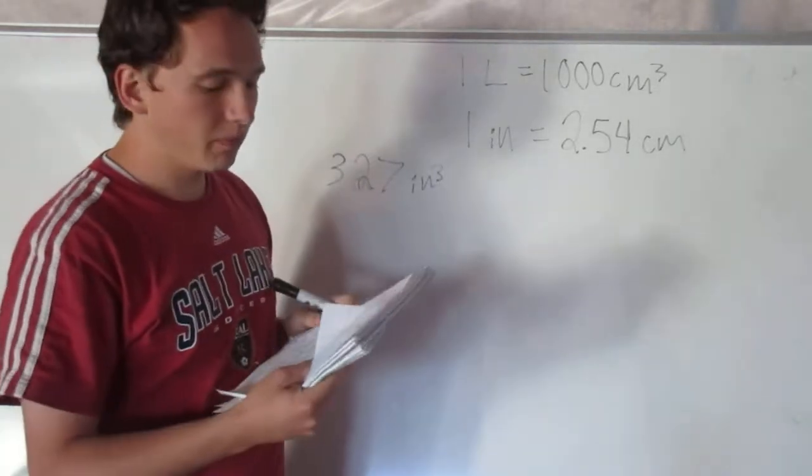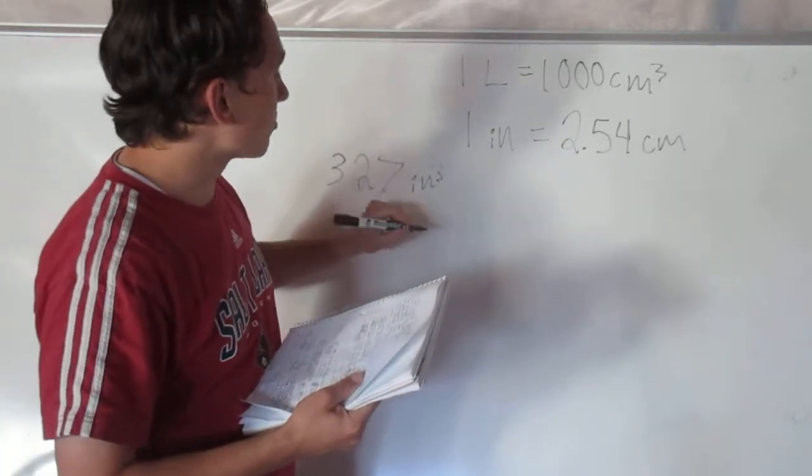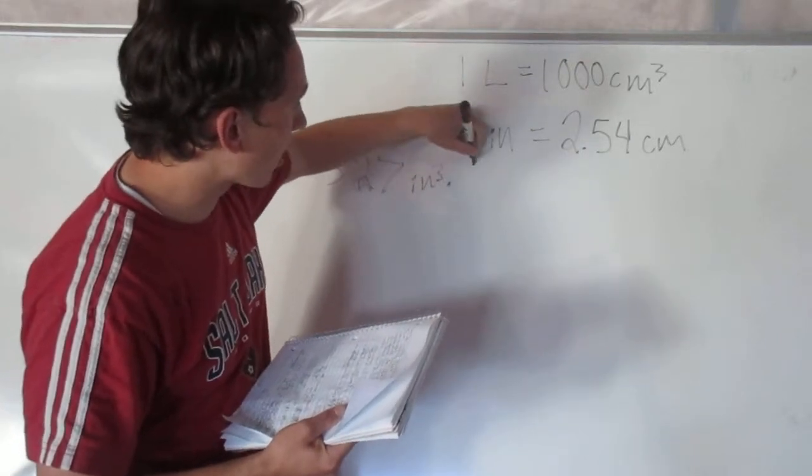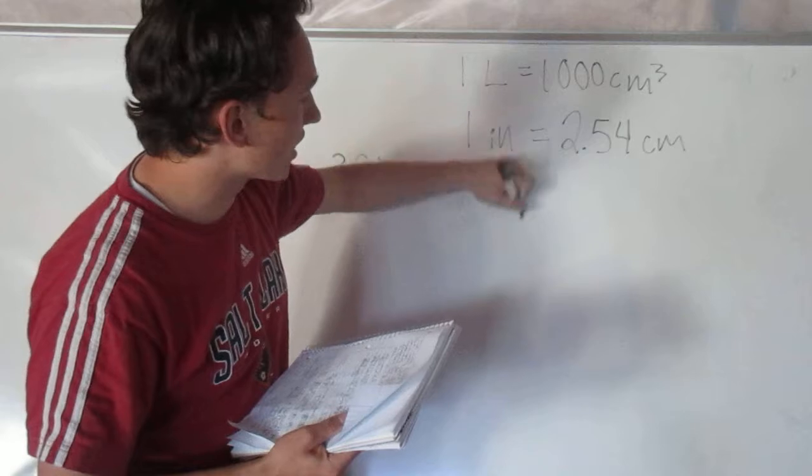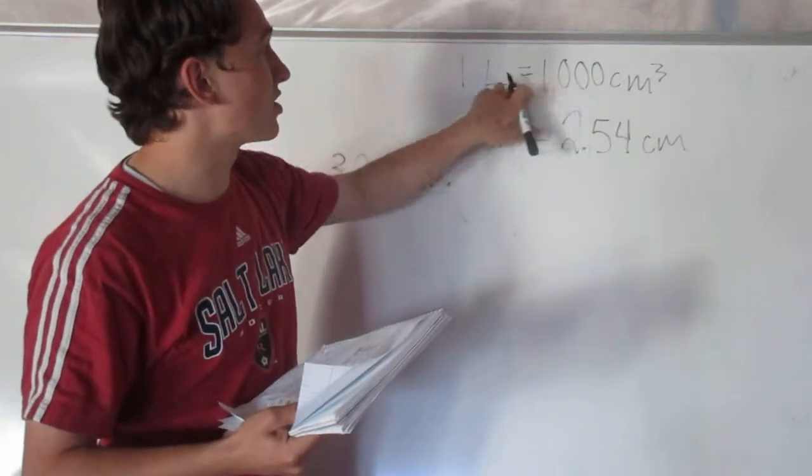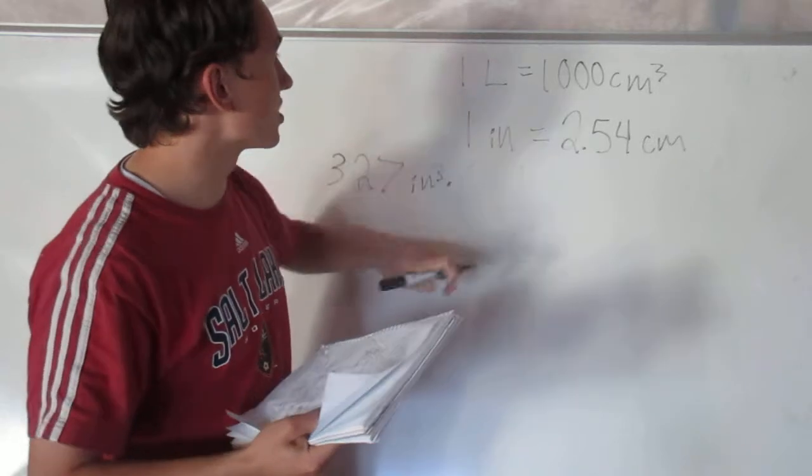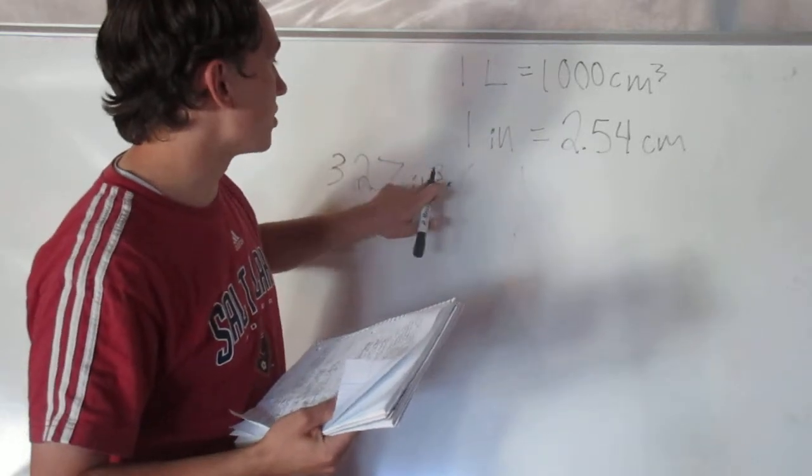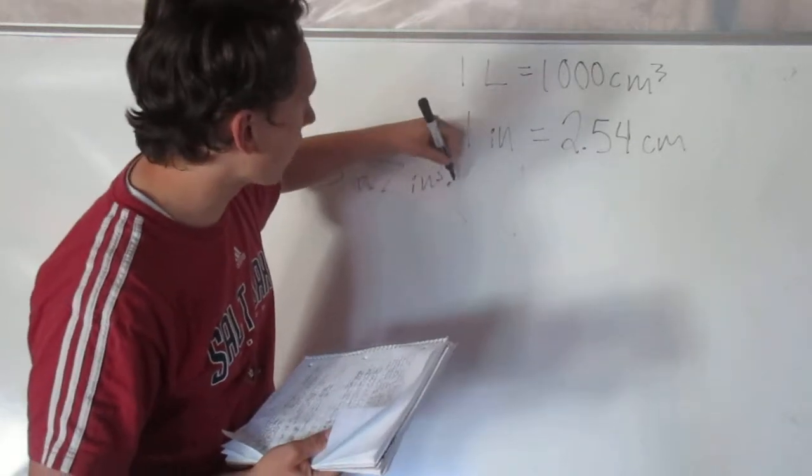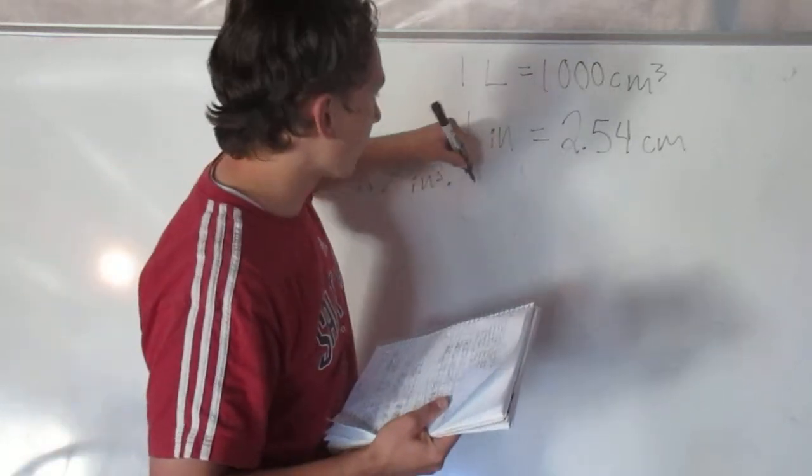Now when I do a conversion problem, the way that I like to set it up is I like to use ratios because I can say I'm going to multiply by 1 and that's not going to change anything. And I can use these ratios—I can express these as a ratio. For instance, I want to eliminate the inches cubed here because that's not the unit I want.